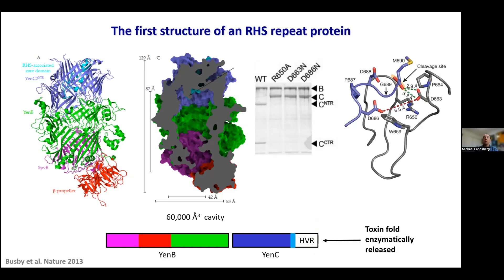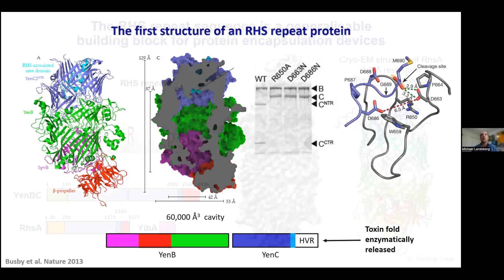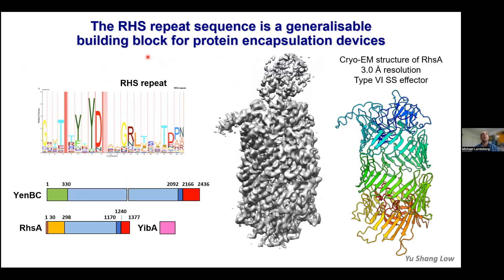That was the first example of an RHS protein, and based on our crystal structure we refined the RHS consensus sequence and searched for other RHS repeat-containing proteins. A very recent structure we've solved is another RHS repeat protein from E. coli, known as RhsA. Comparing RhsA to NBC, it's a much smaller single protein, but with a large stretch of RHS repeat sequences. When we solved the structure using cryoEM, these RHS repeats again form the strand-turn-strand motif in a large hollow cage-like structure, well-suited to encapsulating something.